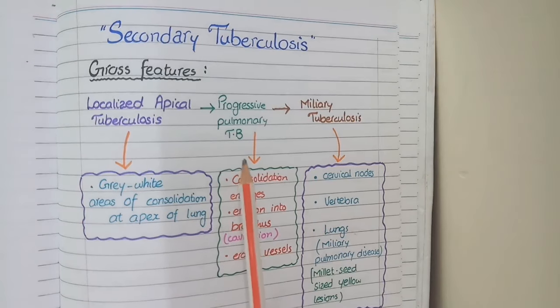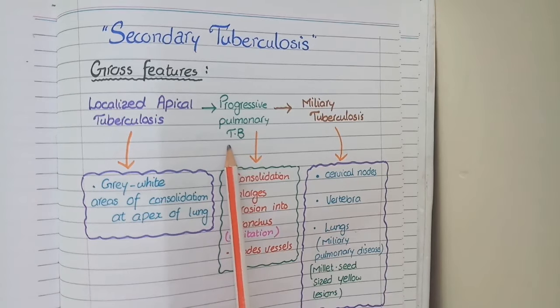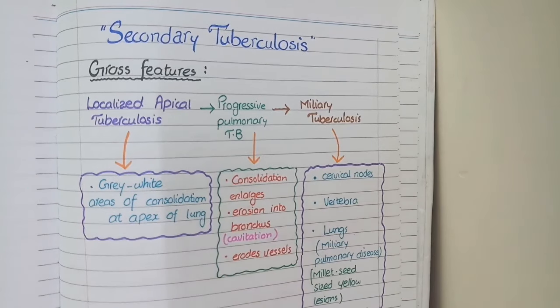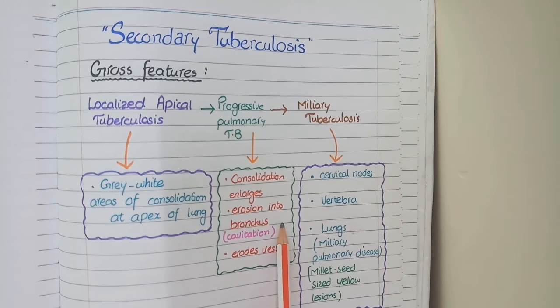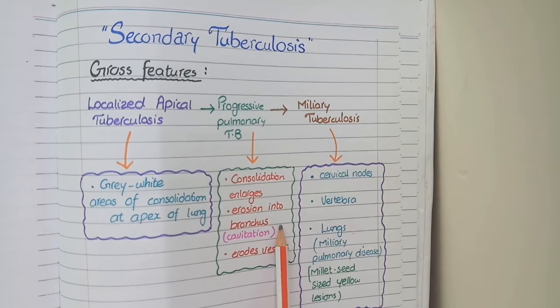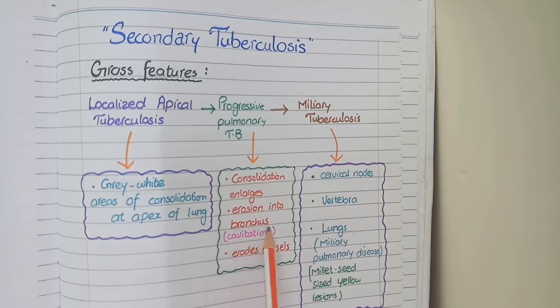Now the second form or second stage of secondary tuberculosis is called progressive pulmonary tuberculosis. In this case, the apical areas of consolidation move downward and cause erosion of bronchus. Resultantly, all the infectious materials may enter into the bronchus and get expectorated through sputum. This converts consolidated areas into cavities and this process is called cavitation.